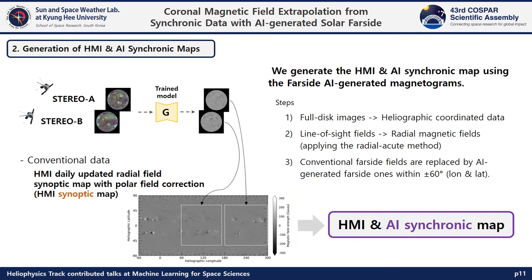Next, we generate the HMI and AI synchronic data using the far-side AI-generated magnetograms. The AI-generated data are converted from full-disk image to heliographic coordinate data, and from the line-of-sight component to the radial magnetic field by applying the radial acute method based on their coordinates. The far-side part of the HMI synchronic data is replaced by the AI-generated magnetograms within ±60 degrees.